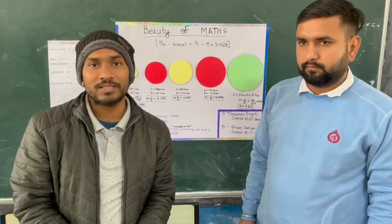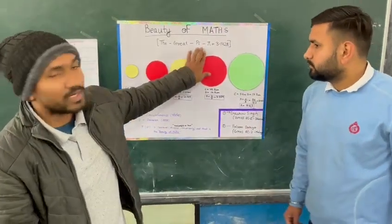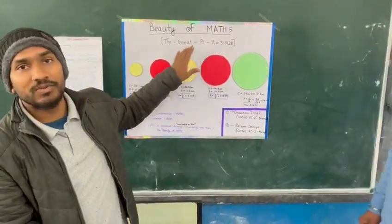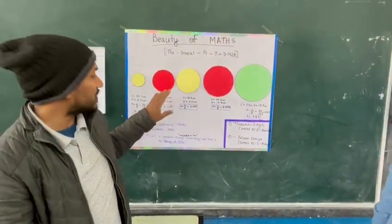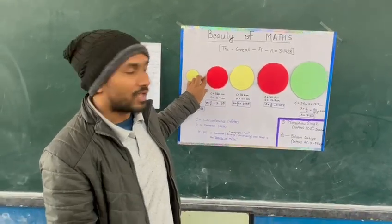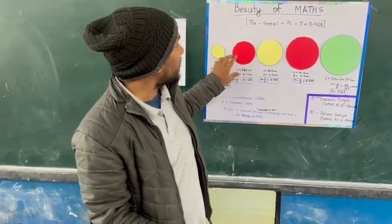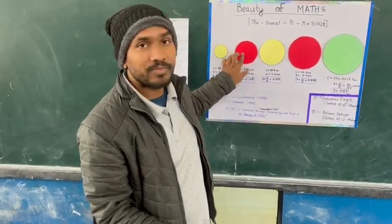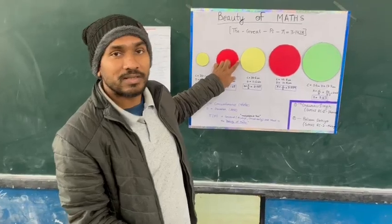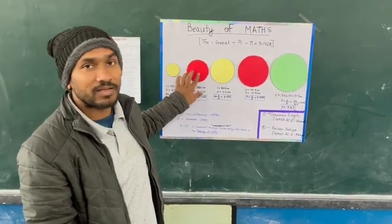One such thing is Pi. Pi is defined as the ratio of circumference — the outer boundary of the circle — to the diameter, which is the biggest line segment passing through the center.